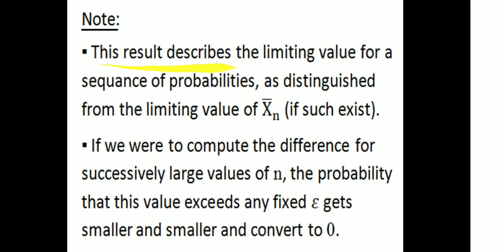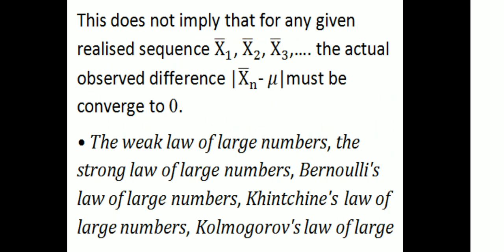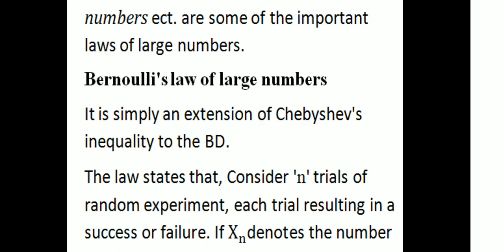This result describes the limiting value for a sequence of probabilities, as distinguished from the limiting value of Xn bar if such exists. If we were to compute the difference for successively large values of N, the probability that this value exceeds any fixed epsilon gets smaller and smaller and goes to 0. Other important laws of large numbers include the strong law, Bernoulli's law, Khinchin's law, and Kolmogorov's law.